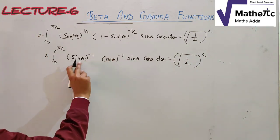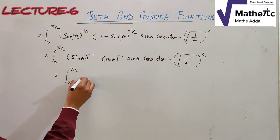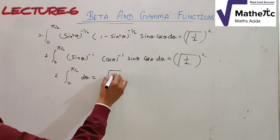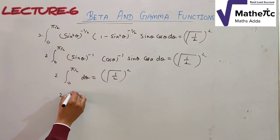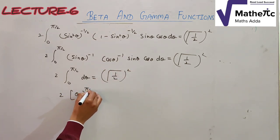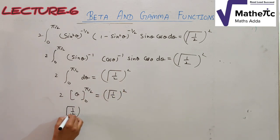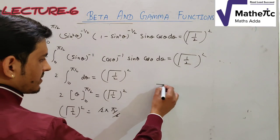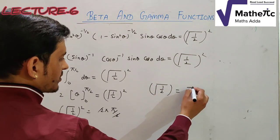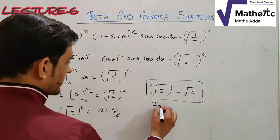After cancellation only dθ remains, so the integral is 2∫₀^(π/2) dθ = 2·[θ]₀^(π/2) = 2·(π/2) = π. Therefore [Γ(1/2)]² = π, and taking the square root gives Γ(1/2) = √π. This is a very important result.